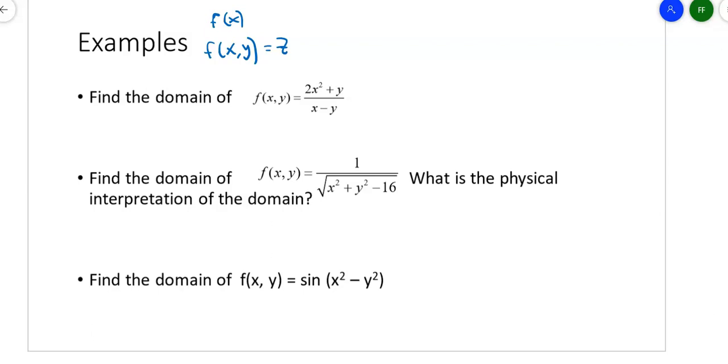Suppose I want to find the domain of a function. Now I'm not just looking at what x values I can put in, I'm looking at what x and y values will work. In this one, what values can I put in for x and y? I can put in anything as long as x and y are not the same. If they're the same, I end up with zero over zero. So my domain is anywhere where x is not equal to y.